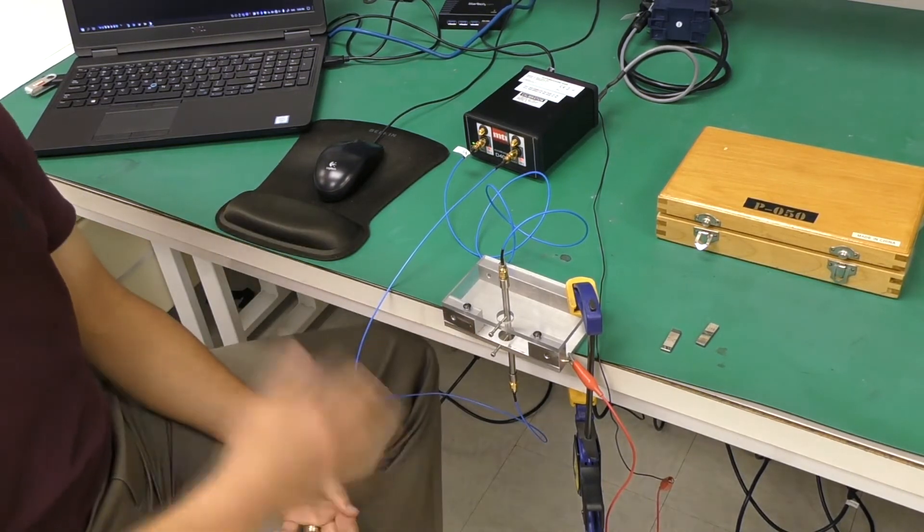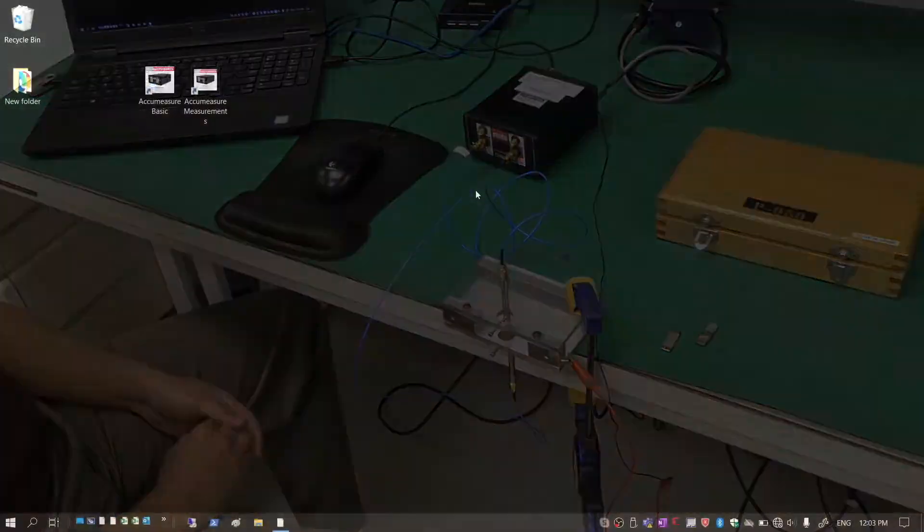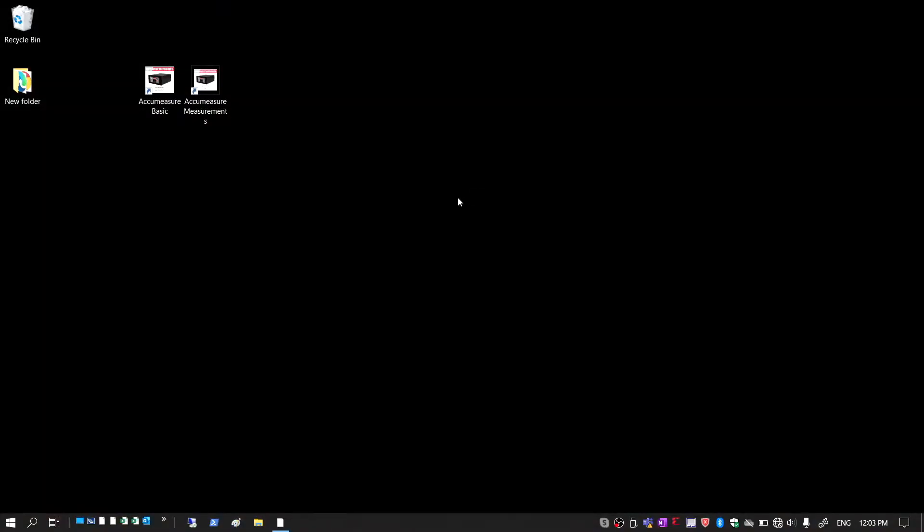In order to calibrate the setup and do all the measurements, we're going to start the software on the computer. The program we're going to use this time is the icon called acu-measure measurements.